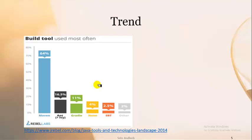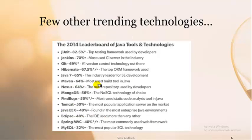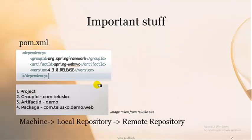You can see the trend — it has been trending from around 2014 and Maven has its own peak values. It is at 64%, meaning this build tool is used most often. For your information, other tools are also mentioned: JUnit on the top for testing frameworks, Jenkins is used for CI/CD, and Git for version control at 69%. Maven is at 64% — these are the commonly used tools.